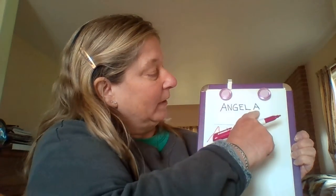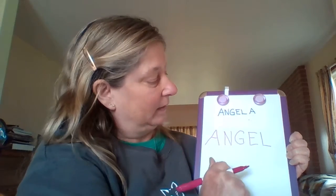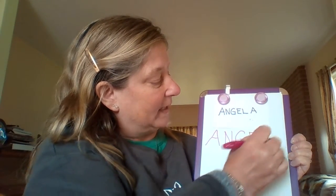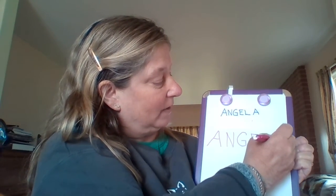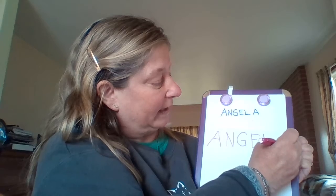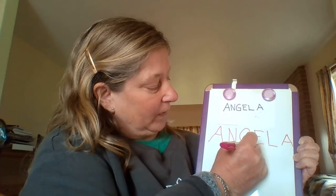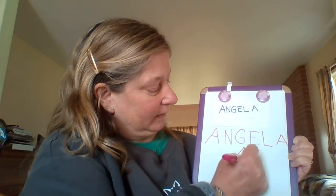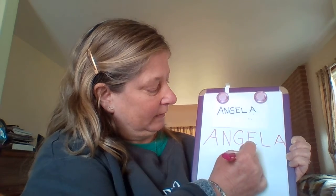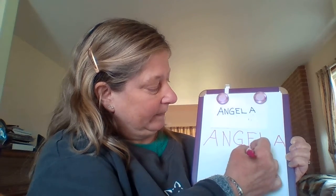Now we have one more letter to write. We have the uppercase A, and we go slant line down, slant line down, little line left to right. Because we made AJ's name today. So if I wanted to write AJ — that's for AJ today. Great job guys! Check back tomorrow and see whose name I'm gonna pull.